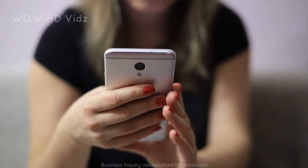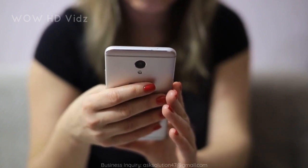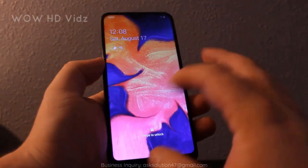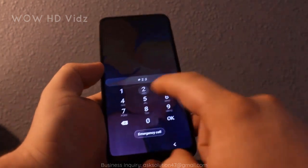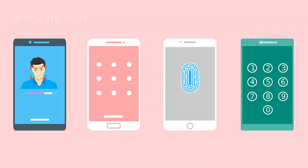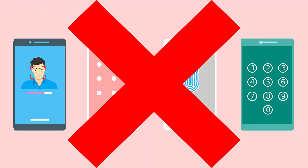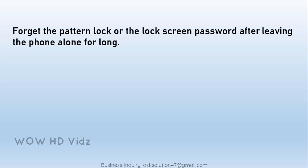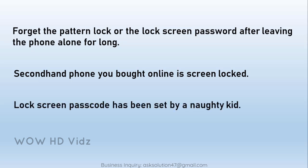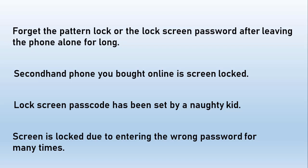Having a lock screen on your phone can surely protect your privacy well, but it is usually a bitter feeling to discover that you're not allowed to use your phone anymore because your phone is locked. All of your important data like messages, photos, songs, movies, and more are out of reach. There are various scenarios when people can't successfully enter the phone — they might forget the pattern lock or password after leaving the phone alone for a long time, a second-hand phone bought online is screen locked, the lock screen passcode has been set by a naughty kid, or the screen is locked due to entering the wrong password too many times.